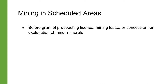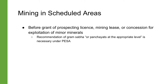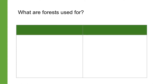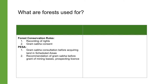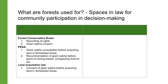Under the PESA law, no prospecting license, mining lease or concession for the exploitation of minor minerals can be granted in scheduled areas without the recommendation of the Gram Sabha or Panchayats at the appropriate level. So under all three laws — the rules made under the Forest Conservation Act, the PESA law, and the Right to Compensation and Transparency in Land Acquisition law — forest dwelling communities have, through their Gram Sabhas, the space to influence decisions regarding the use of forests for non-forest purposes.